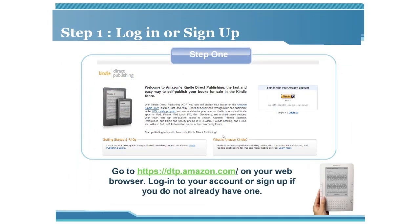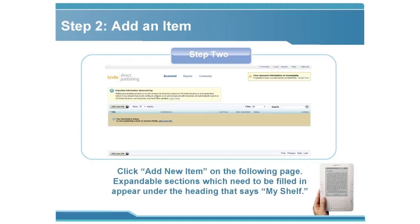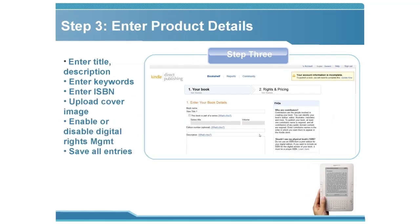Step one: Login or sign up. Go to the KDP link in your web browser, log into your account, or sign up if you don't already have an account. Step two: Add an item. Click 'Add New Item' — on the following page, expandable sections which need to be filled in will appear under the heading 'My Shelf.'